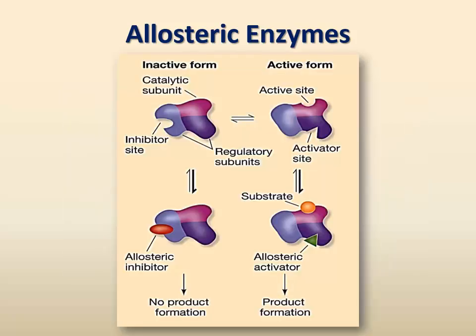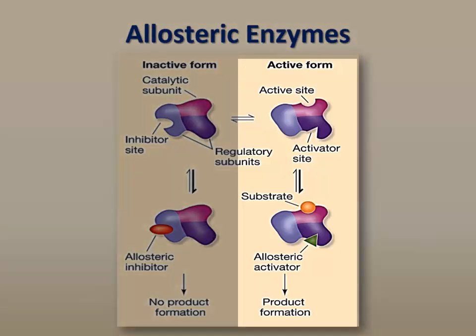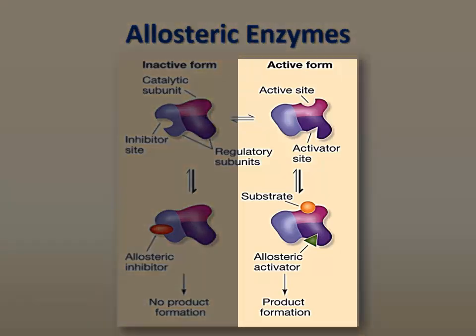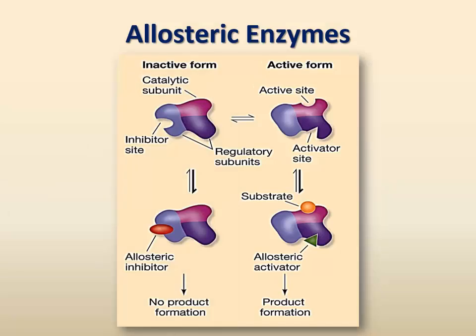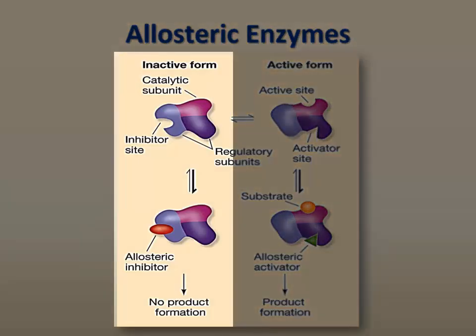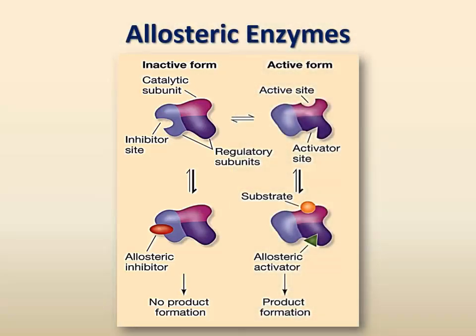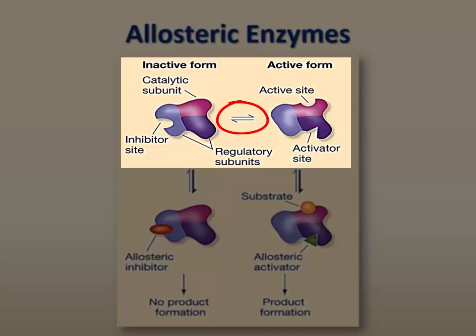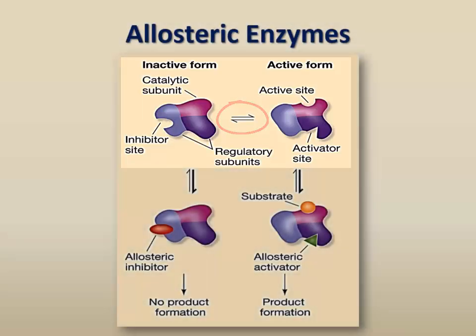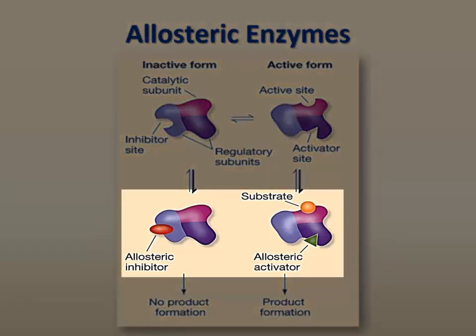Allosteric enzymes normally exist in two forms: an active form and an inactive form. In the active form, the active site is in the right configuration to interact with the substrate, resulting in the formation of products. While in the inactive form, the active site is in a configuration that does not favor interaction with the substrate and therefore no products are formed. An allosteric enzyme can toggle between its active and inactive forms. An allosteric activator stabilizes the enzyme in its active form, while an allosteric inhibitor stabilizes the enzyme in its inactive form.